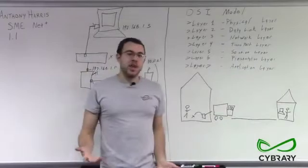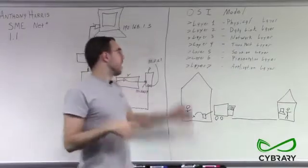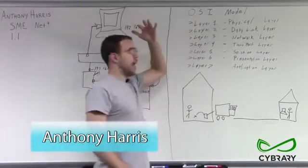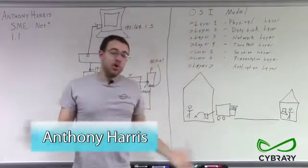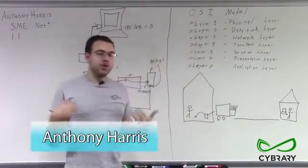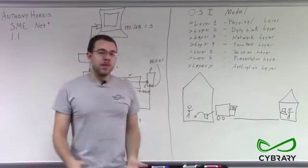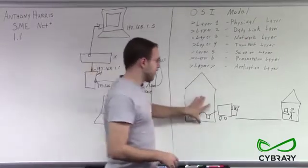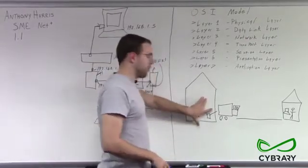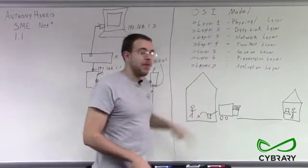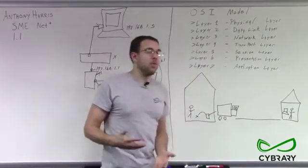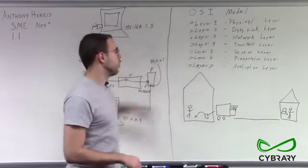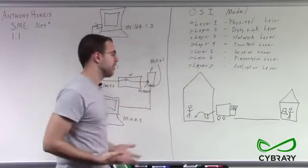We went over our layers in depth. We talked about our OSI model as a general overview, and we talked about our mnemonic to remember it. But let's backtrack a little bit and revisit our shipping model now that we know a little bit more about the details of our layers one through seven.